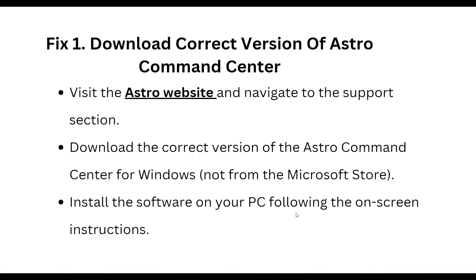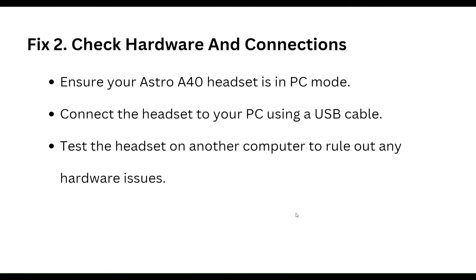First, download the correct version of Astro Command Center. Visit the Astro website and navigate to the support section. Download the correct version of Astro Command Center for Windows — not from the Microsoft Store. Install the software on your PC following the on-screen instructions.